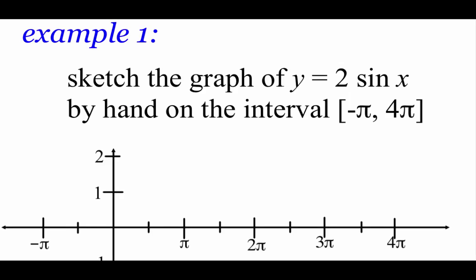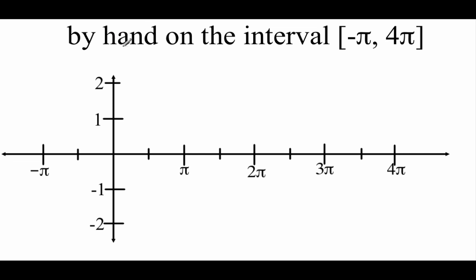In our first example, we've got the equation y equals 2 sine of x, and we're going to sketch this graph on the interval from negative pi out to 4 pi. We'll use the unit circle to help. Starting at 0: the sine of 0 is 0, and 0 times 2 is still 0, so the first point is (0, 0). Our next quadrant angle is at pi over 2. Sine of pi over 2 is 1, multiplied by 2 gives us the ordered pair (pi over 2, 2), which is a maximum value.